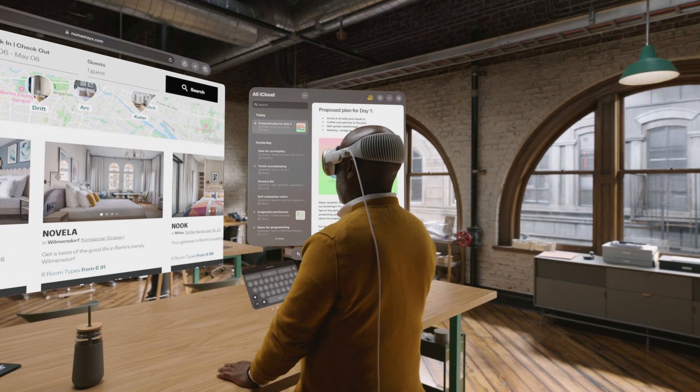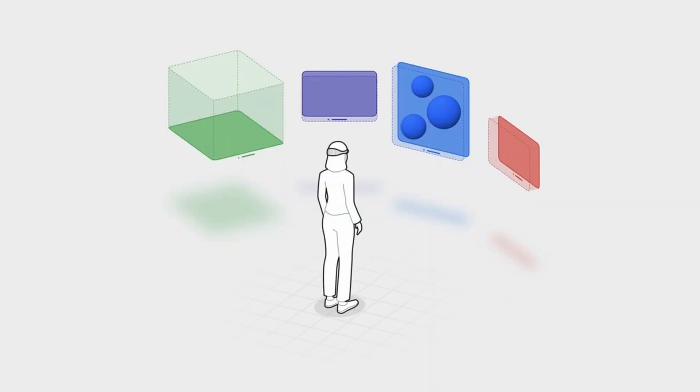These windows live inside of a so-called shared space. The shared space is everything surrounding the user that is displayed and rendered by the Vision Pro system. In a shared space, multiple apps can run and display windows and volumes at the same time — for example, a notes window, a volume from your custom app, and a window playing a YouTube video. These windows and volumes are not individual; they coexist in the shared space.